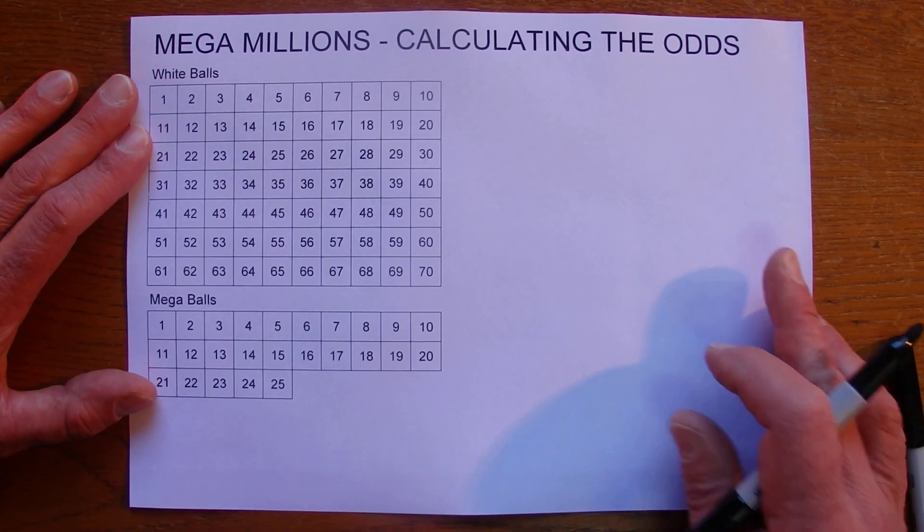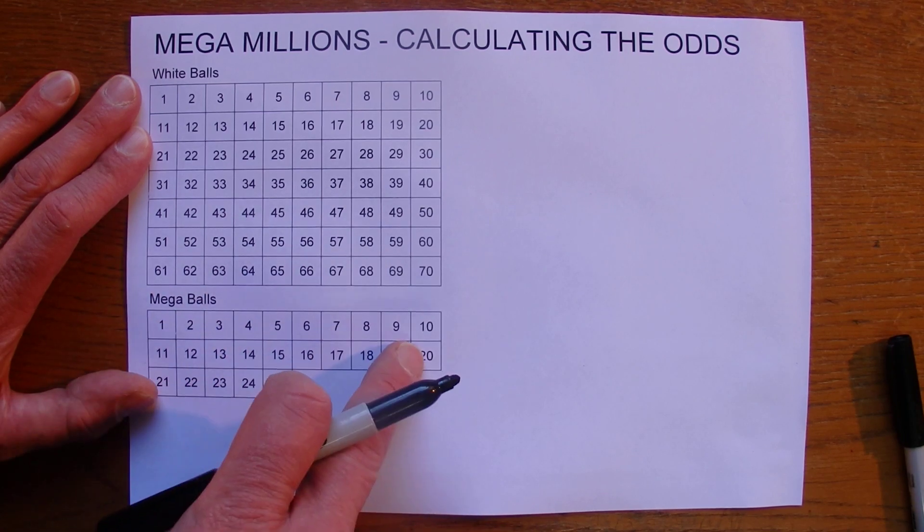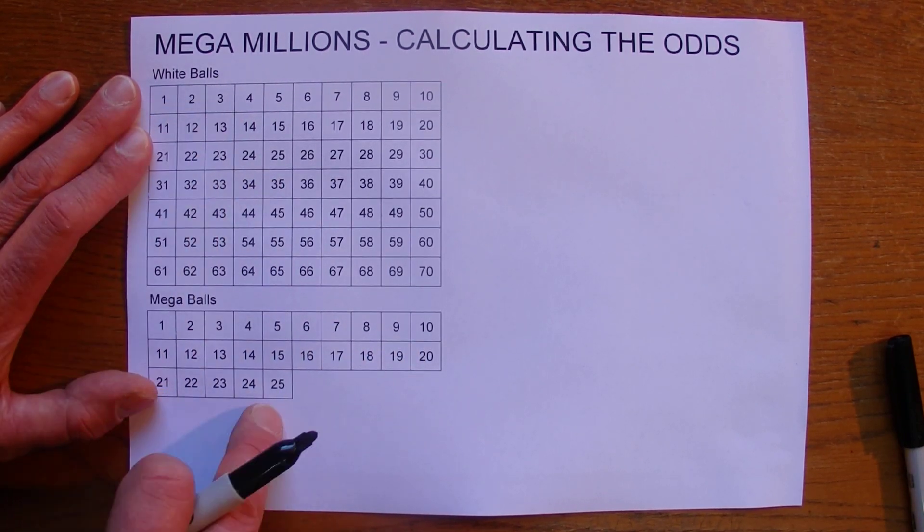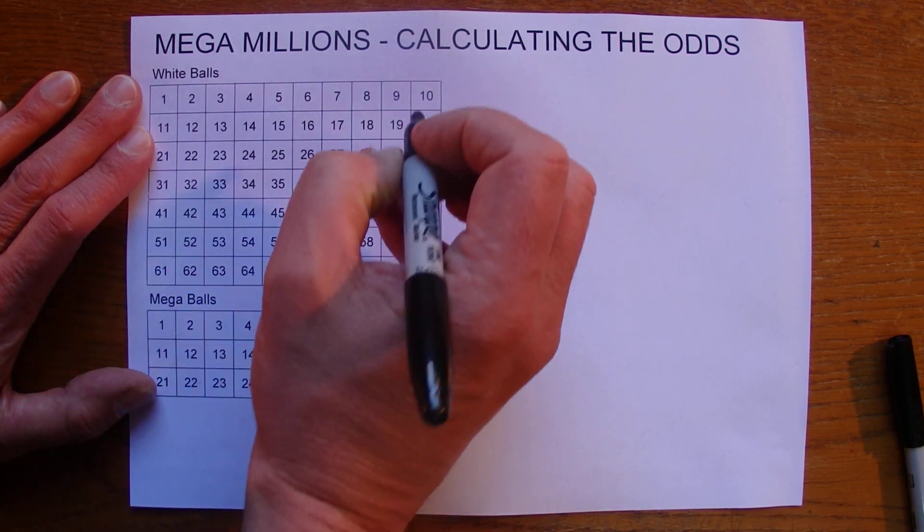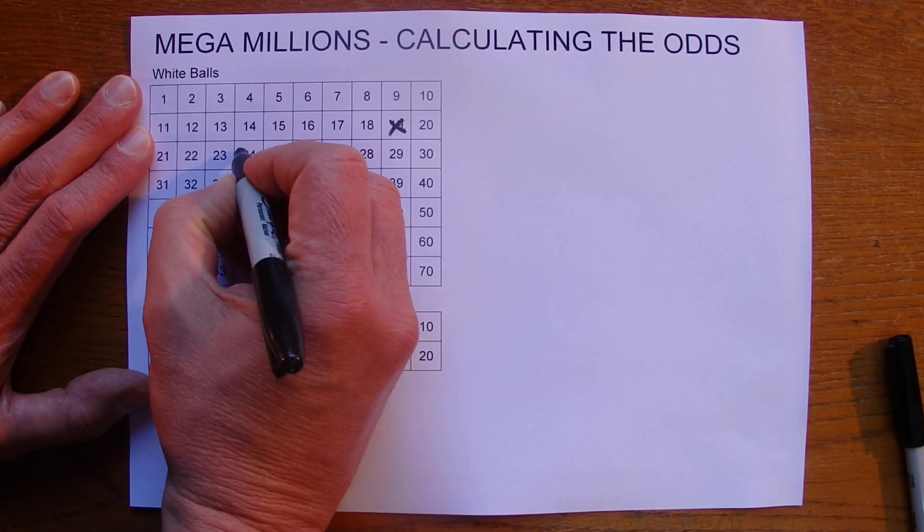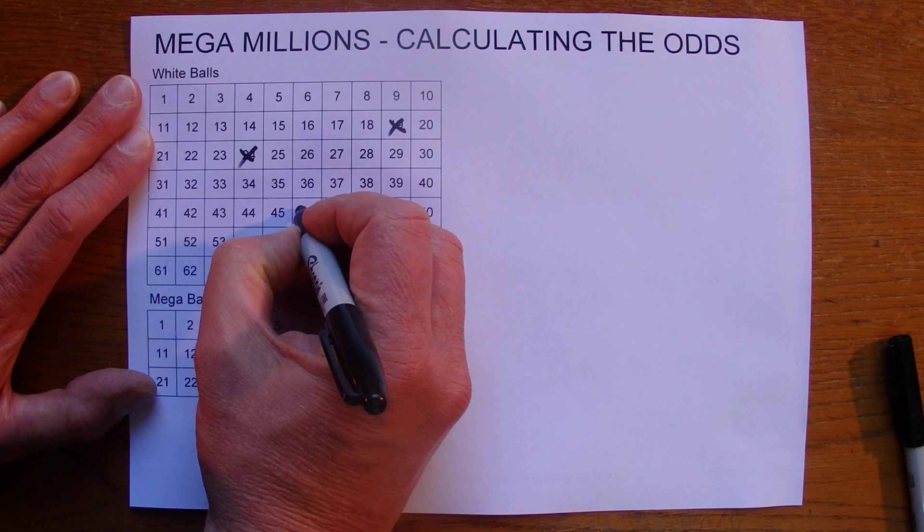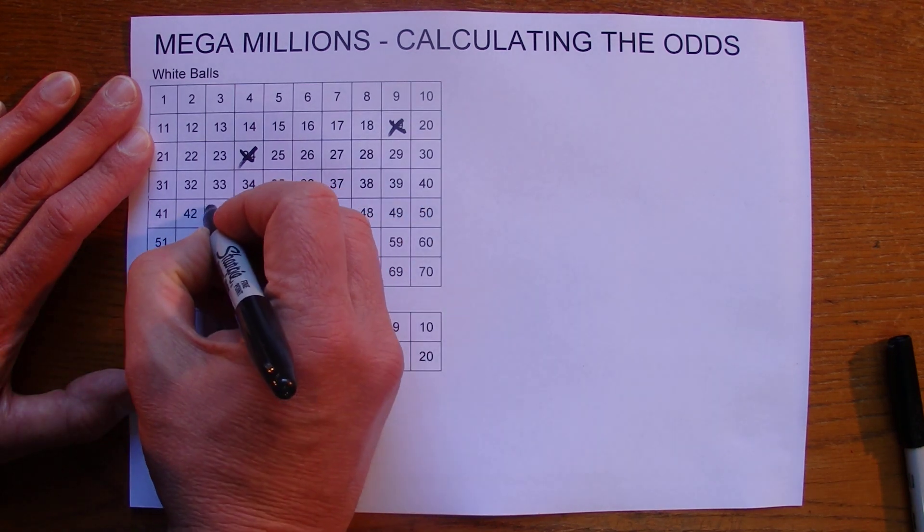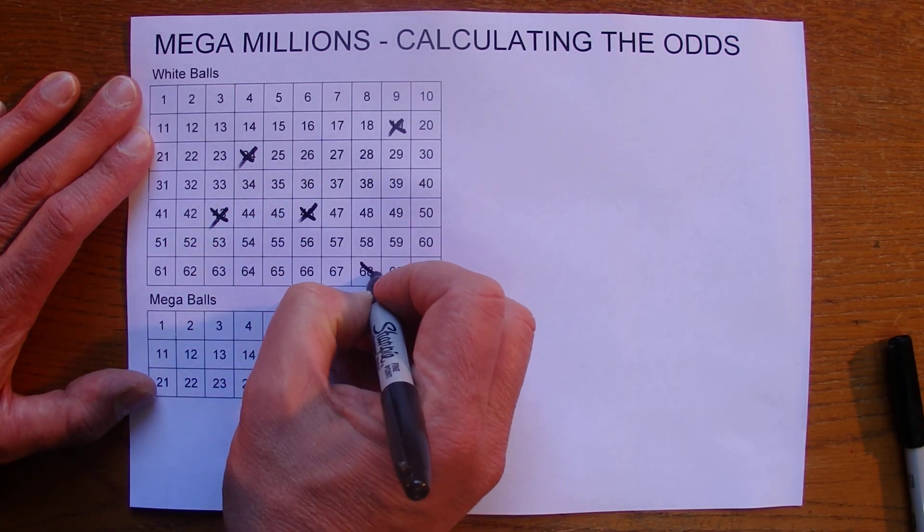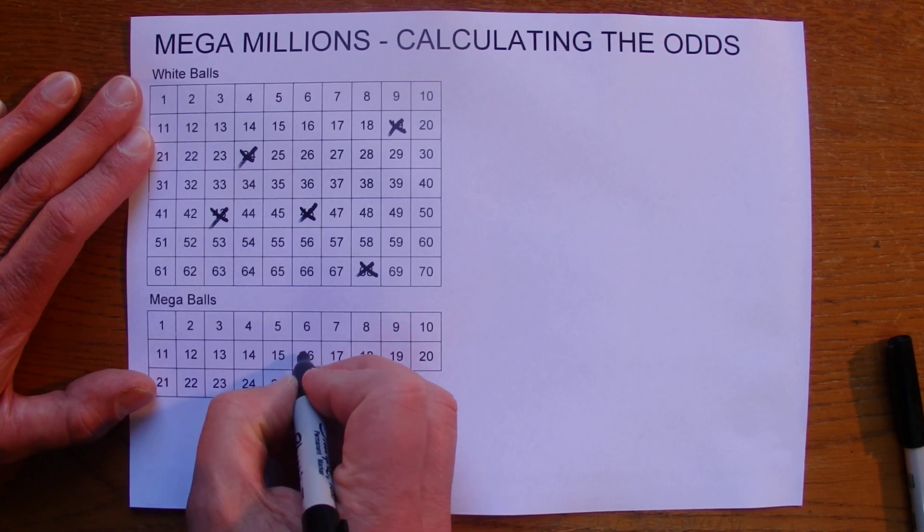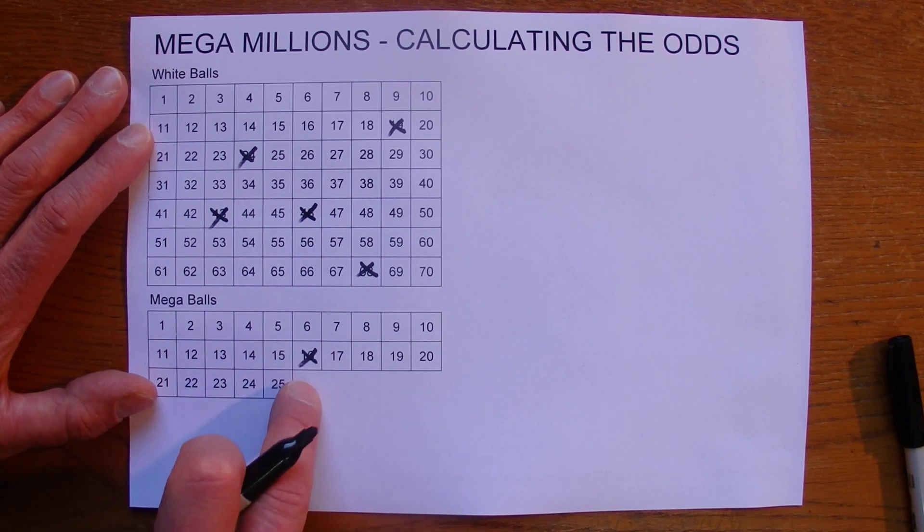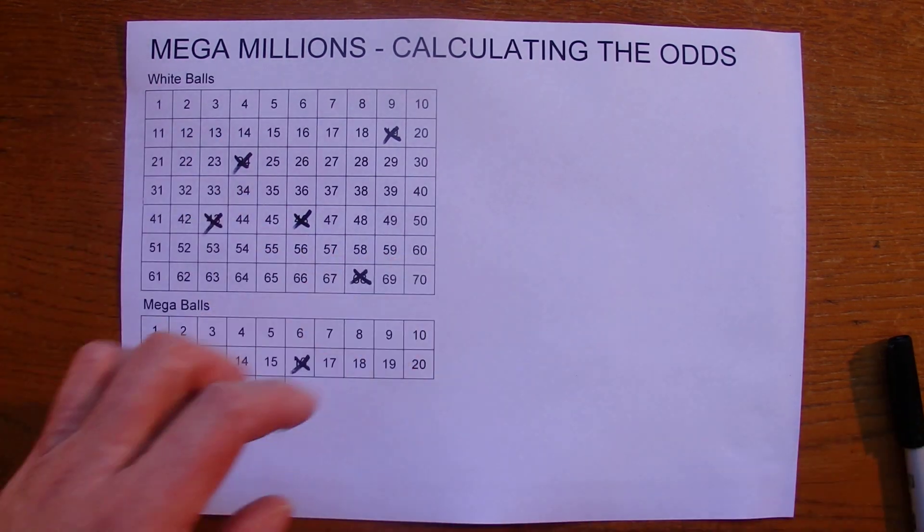So what I'm going to do is on this grid I've got the numbers 1 to 70 in the top section for the white balls and then 1 to 25 in the bottom section and I'm just going to randomly select five numbers in the top section and this will help you understand how the odds are calculated. I've got five numbers in the top section and I've selected one number in the Mega Balls.